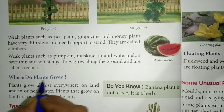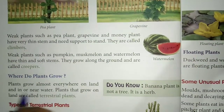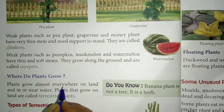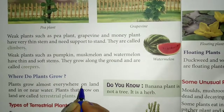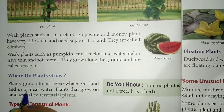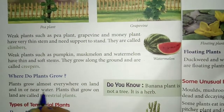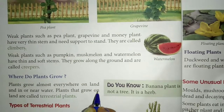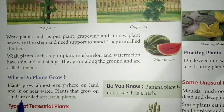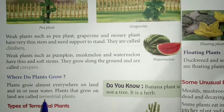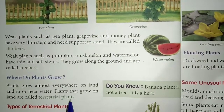Next, where do plants grow? Plants grow almost everywhere — on land and in or near water. Plants that grow on land are called terrestrial plants.